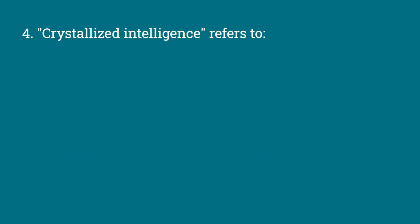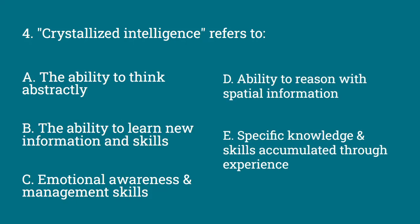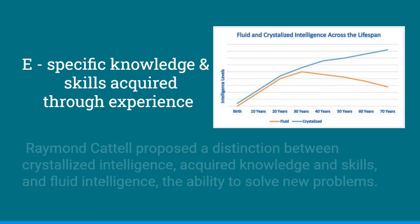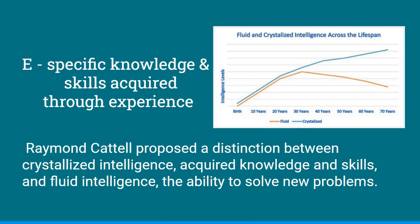Crystallized Intelligence refers to — the options are: the ability to think abstractly; the ability to learn new information and skills; emotional awareness and management skills; ability to reason with spatial information; or specific knowledge and skills accumulated through experience. The answer is E, specific knowledge and skills acquired through experience. Raymond Cattell proposed a distinction between crystallized intelligence (acquired knowledge and skills) and fluid intelligence (the ability to solve new problems).